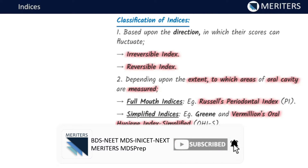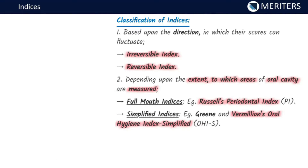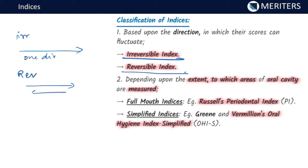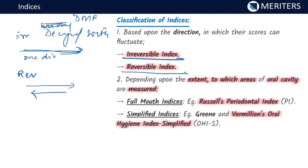Indices can be classified based on the direction in which scores can fluctuate into irreversible and reversible indices. Irreversible means it can only go in one direction, whereas reversible means it can go in both directions. For example, in your DMFT index — decayed, missing, and filled teeth — a decayed tooth goes in one direction because you cannot undecay a tooth.